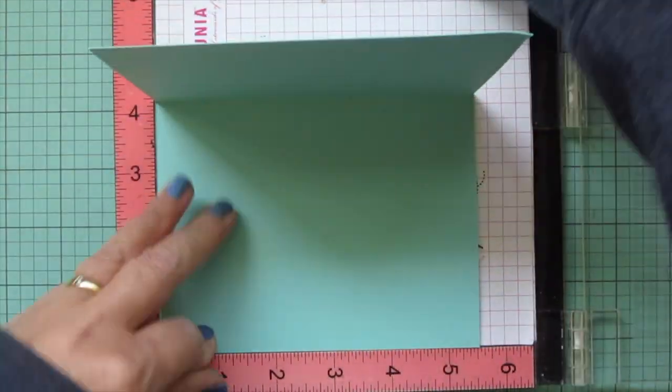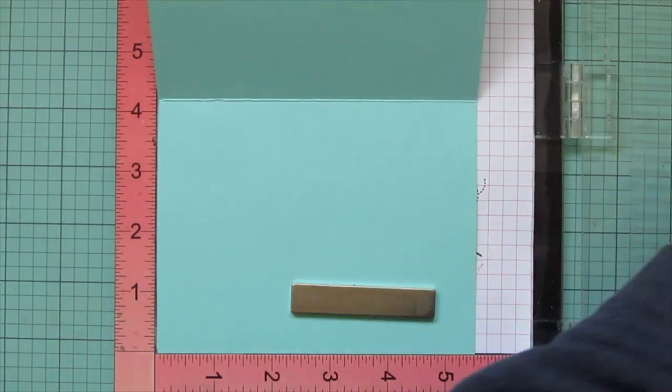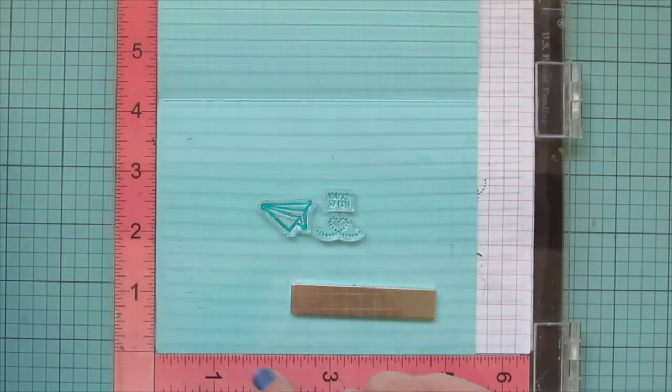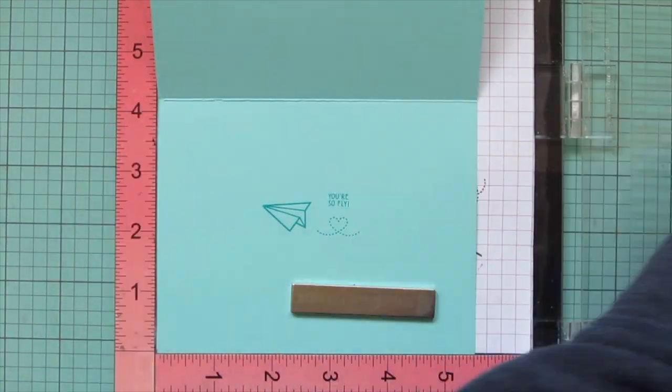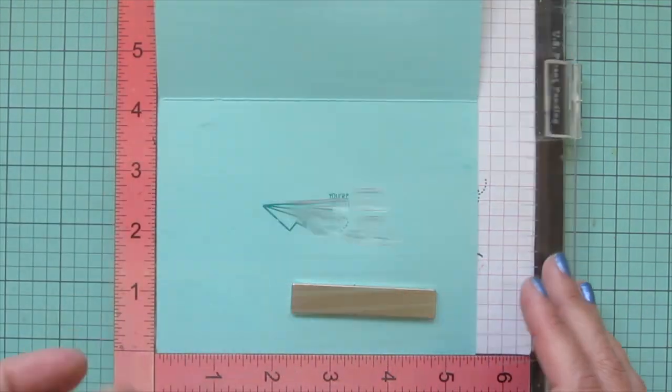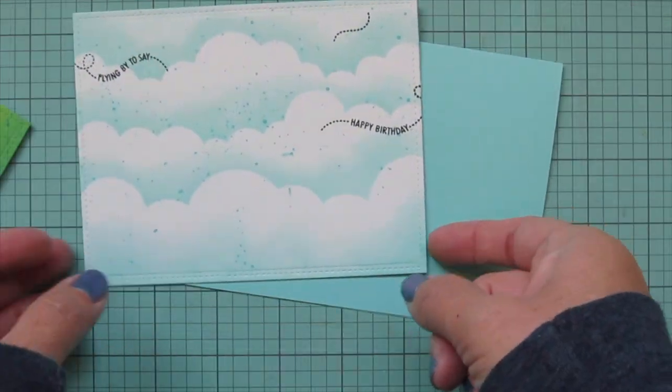I'll set that aside and pop my card base in my MISTI. I'm using some Mermaid cardstock and this time I am stamping in Peacock ink. Again, I am using the Just Plain Awesome Sentiment Trails for the inside as well. I just chose another one of the paper airplanes and the trails and the tiny sentiment that says 'you're so fly,' which I think is really adorable.